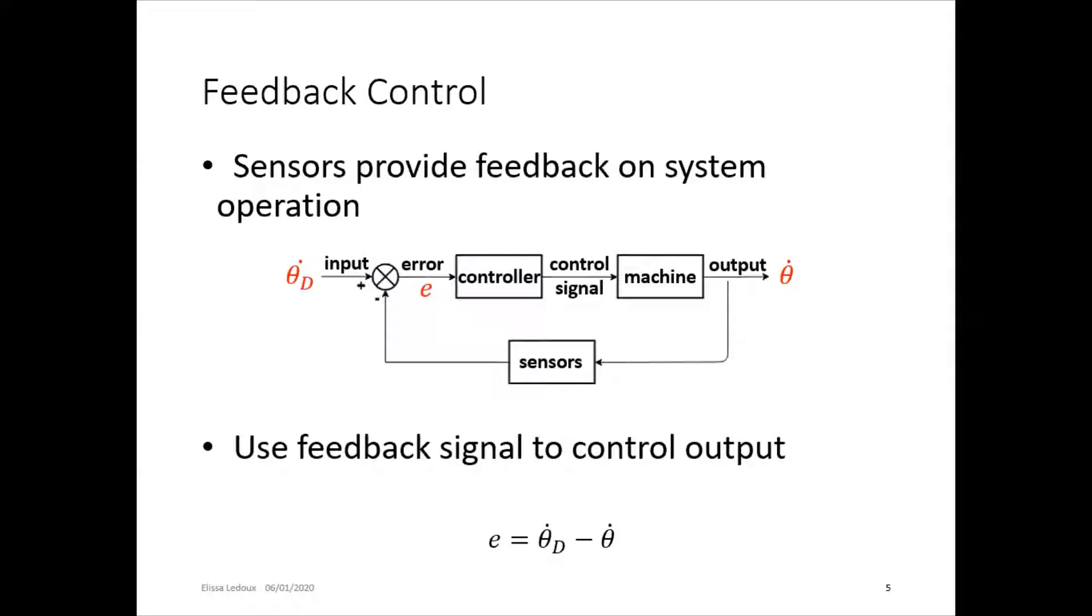So in a normal feedback control system, you have the input, which, let's say if this is for a motor, then you have desired motor speed. So that would be the input.